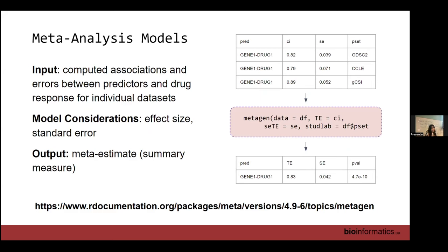The input is concordance index from each study and standard error from that study. So the concordance index is calculated from each P-set — GDSC and the others — and the standard error is derived from that analysis as well.